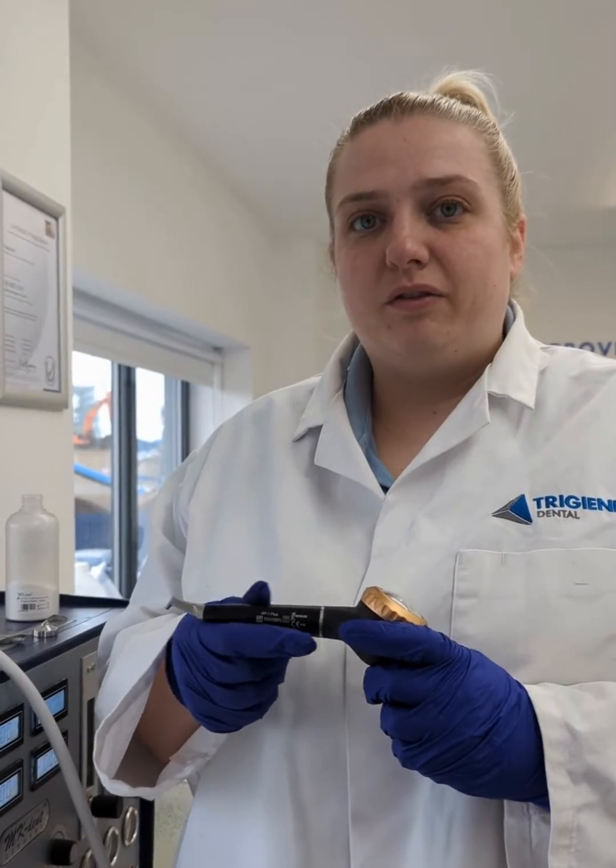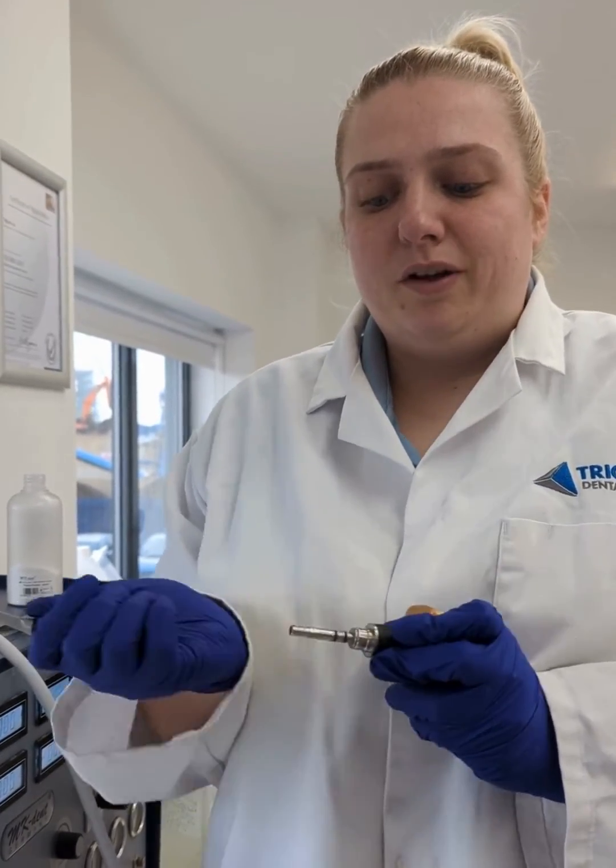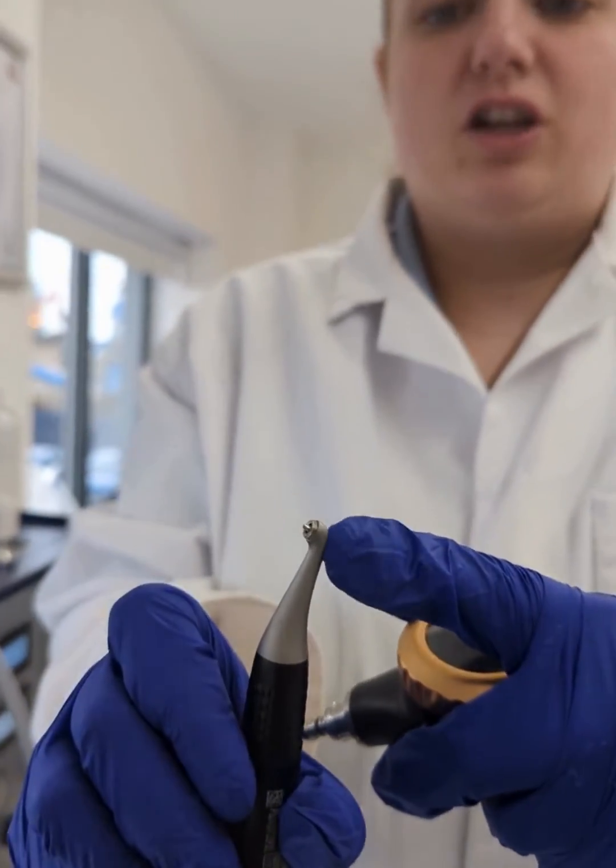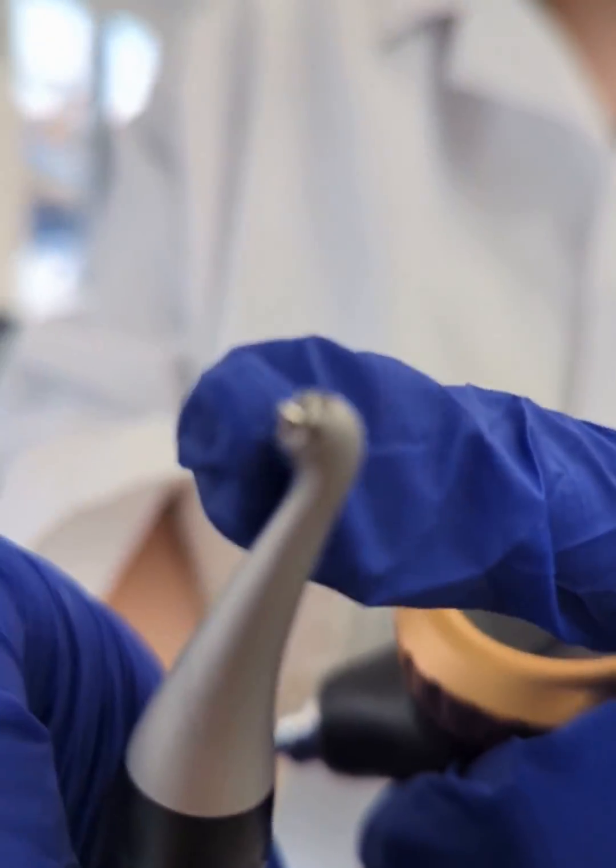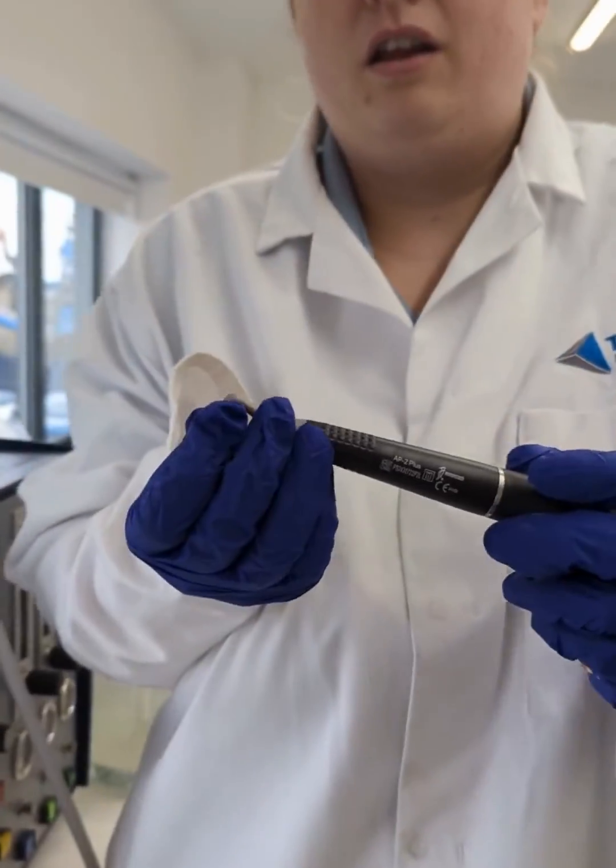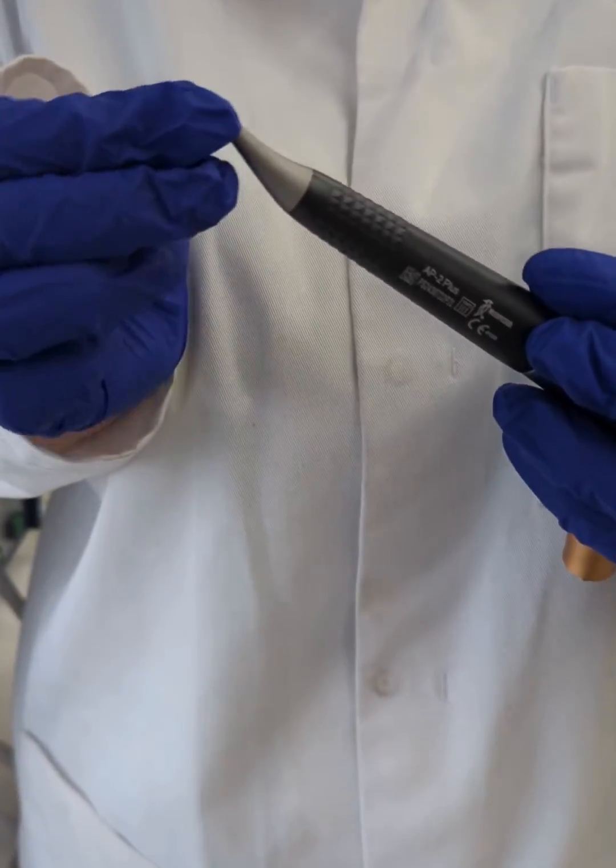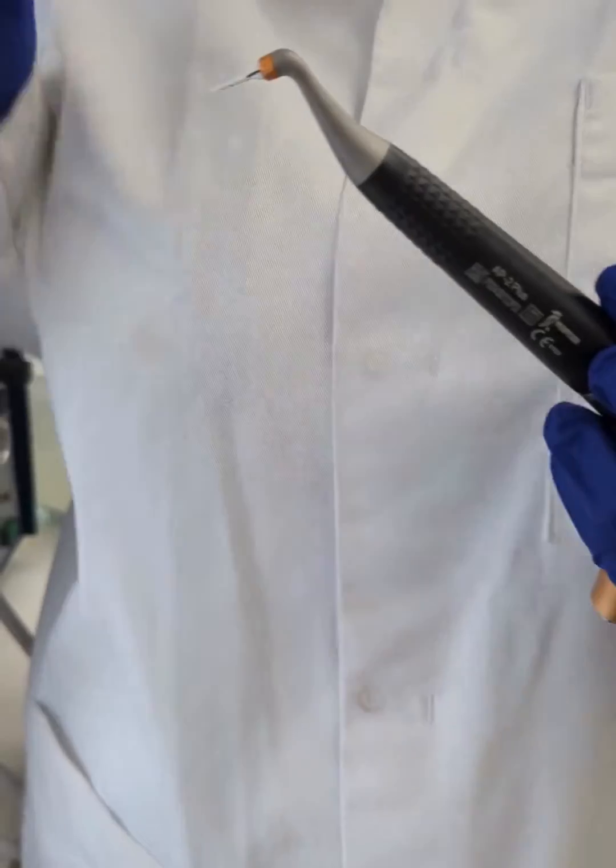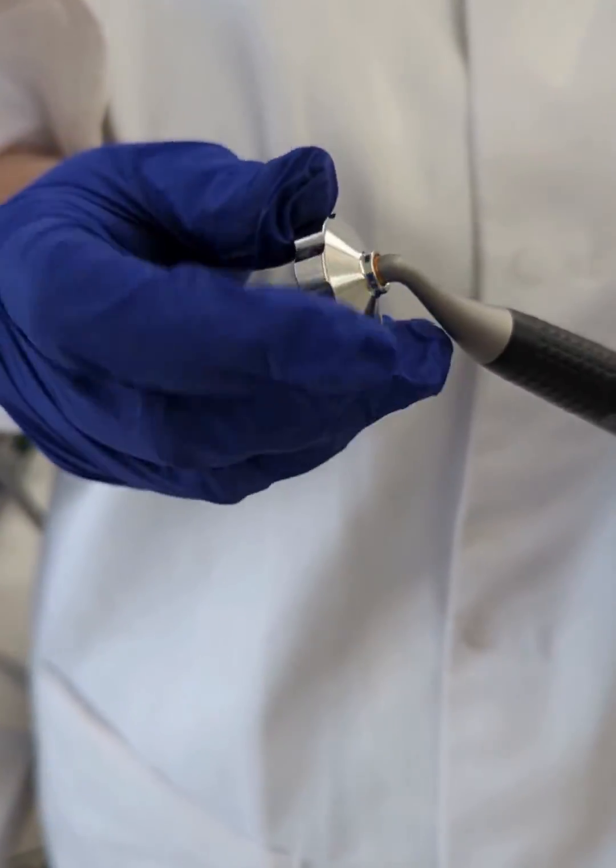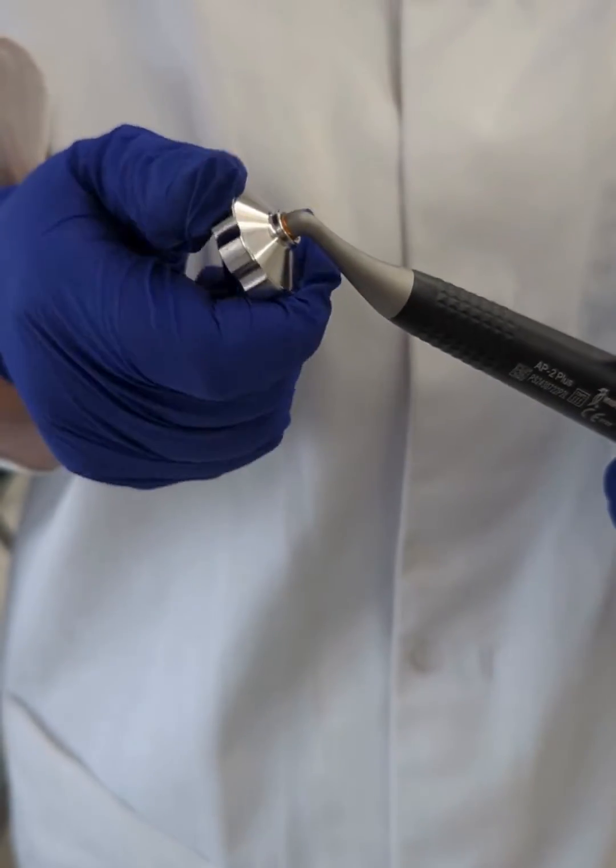When you start with the perio, you need to remove the prophy handpiece and you will use the perio button. As you can see at the top here, it has an attachment for the tips that you need to use, which do come with the handpiece. So just attach that and it comes with a little tightening tool in the box here. So you can just tighten that in place, ready for use.